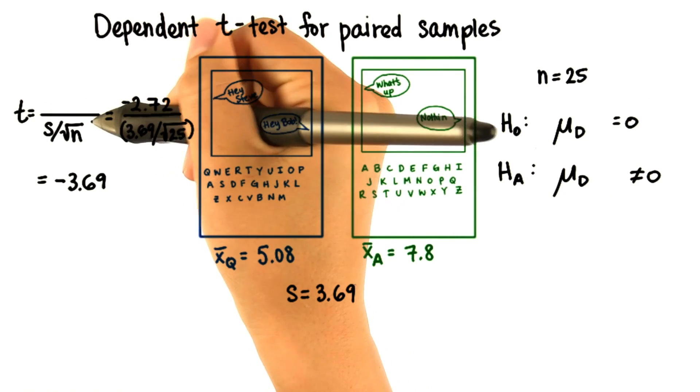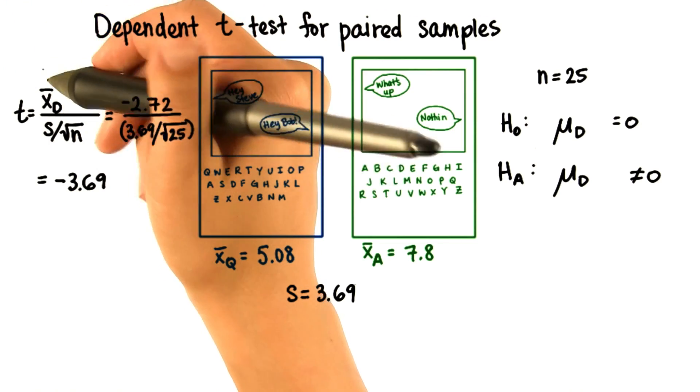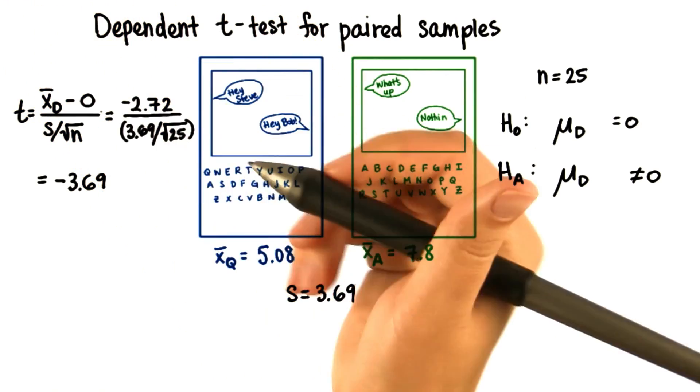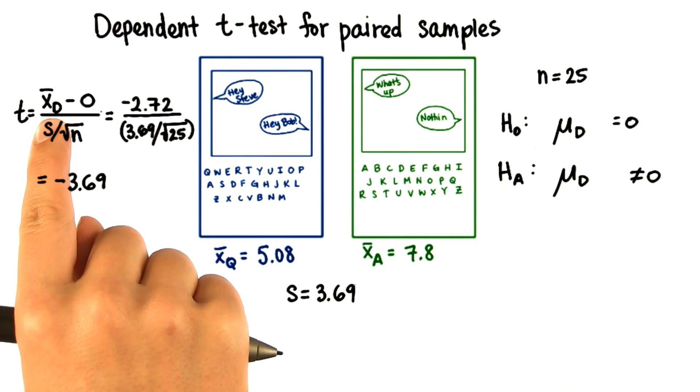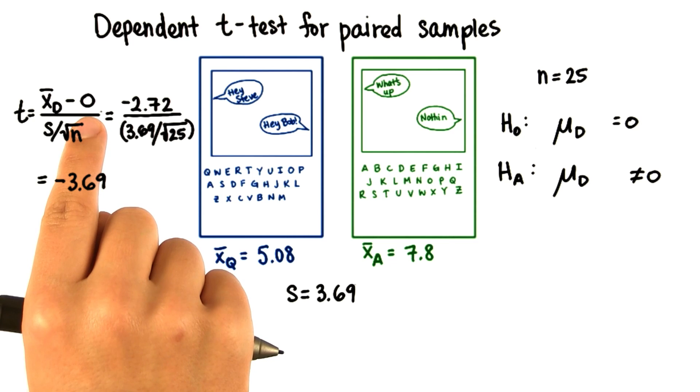Then instead of the numerator we had before, we'll have the difference between the sample means and then subtract 0. We're testing to see if this difference between the sample means is significantly different from 0.